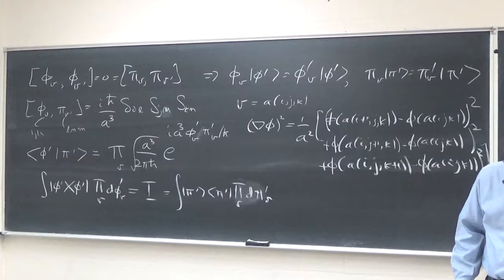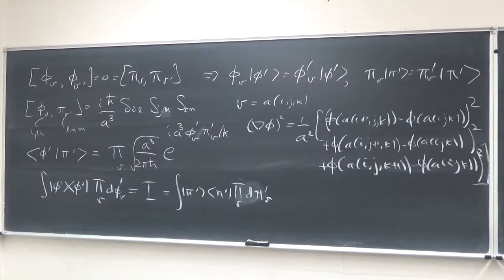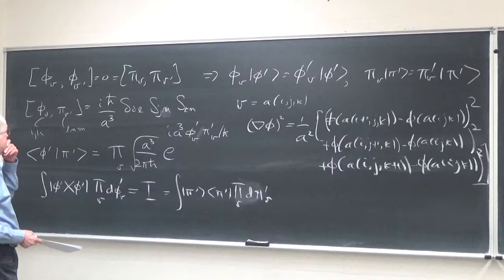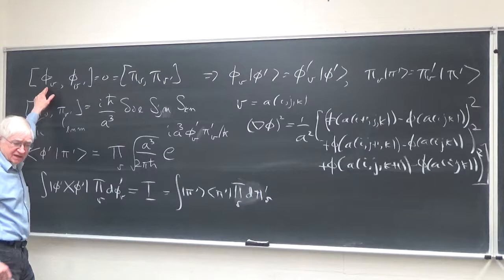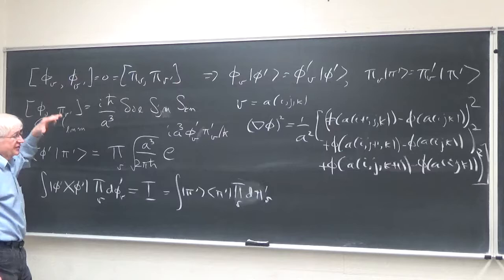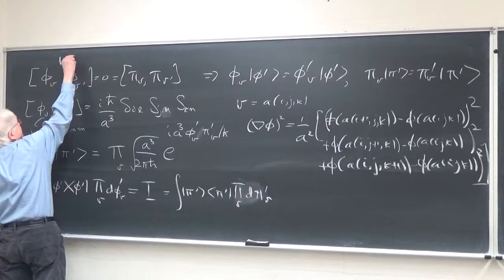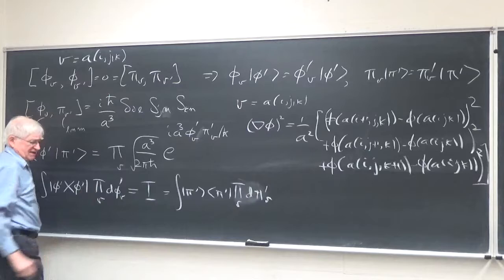The basic idea of quantum field theory on a lattice is to be able to approximate path integrals numerically, or even analytically, but certainly numerically. Instead of defining a field at every point in space-time, we define them at different lattice points. The lattice points I'm writing: V for vertex equals a lattice spacing times a triplet of integers I, J, K.